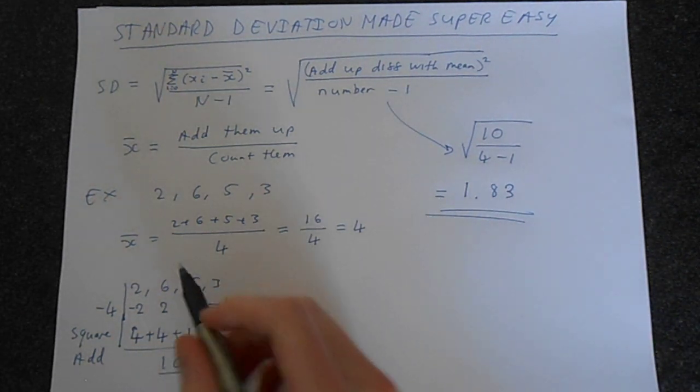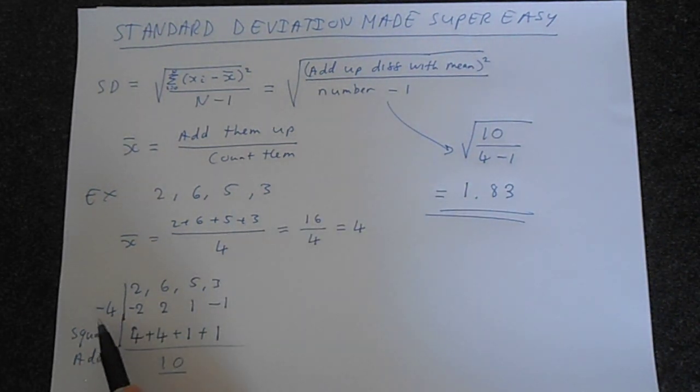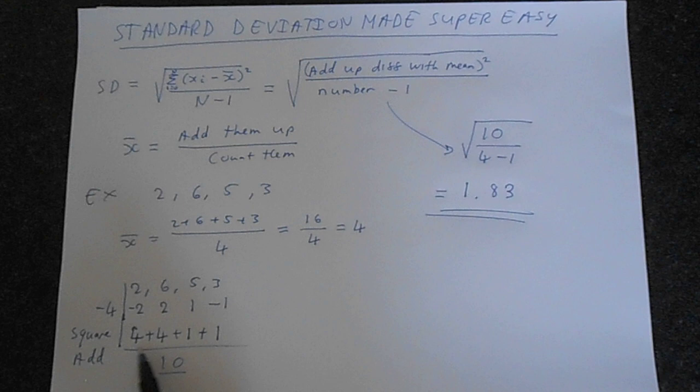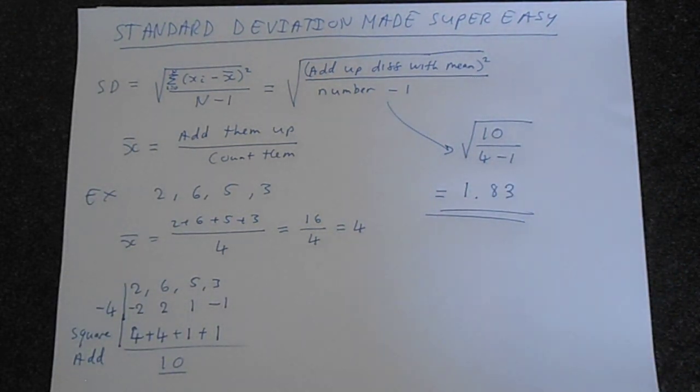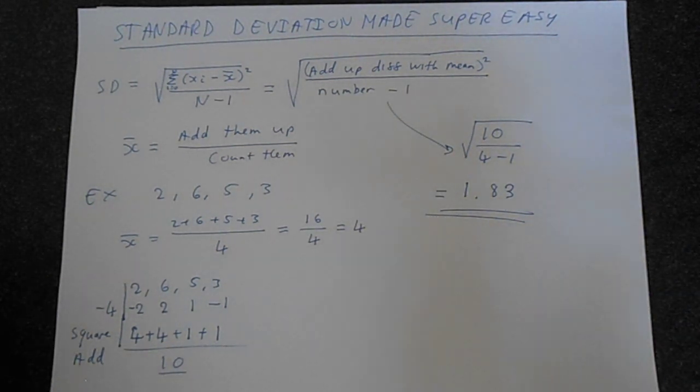Very simple. Just write out the numbers. Subtract the mean from each of the numbers. Square each of them and then add them all up. And then just substitute in. That's all standard deviation is. Extremely simple. So hopefully this video has been helpful to you. You now should have no problems with standard deviation. And finally, thank you for watching.